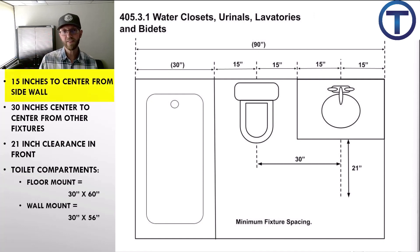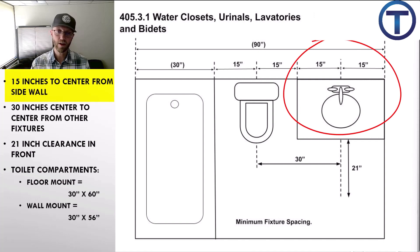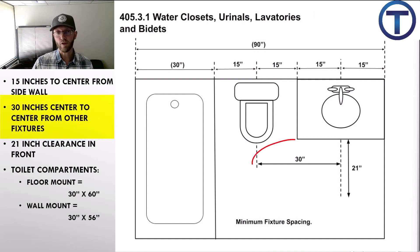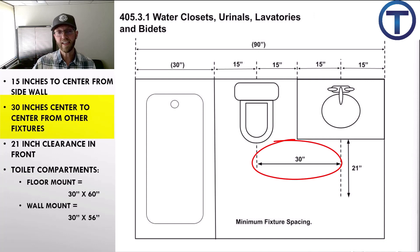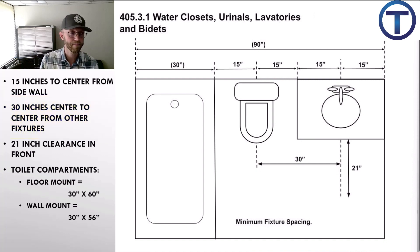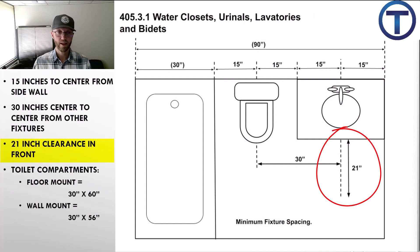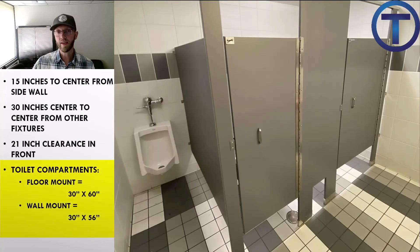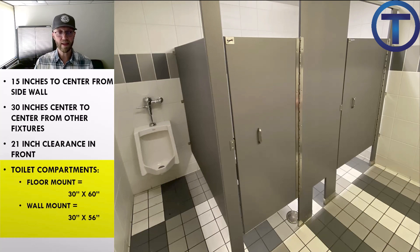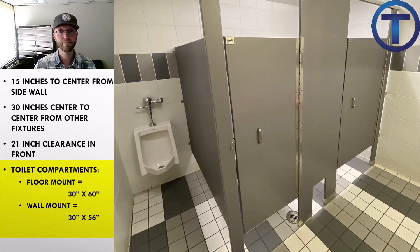Fixtures need to be 15 inches away from a sidewall to the center. You can see that with a lavatory. 30 inches center to center from other fixtures — 15 inches for one fixture, 15 inches for the next. We have to have a front clearance of 21 inches — that's where you can approach the fixture, the space out in front of the toilet. This also defines toilet compartments: the smallest a floor-mounted compartment can be is 30 by 60 inches, and a wall-mount toilet compartment is 30 by 56 inches.